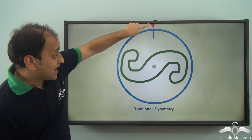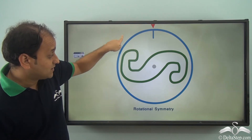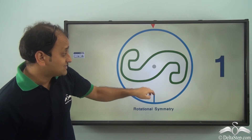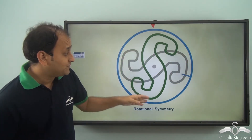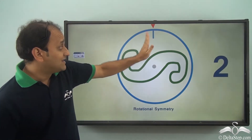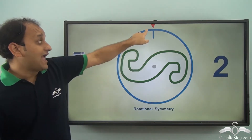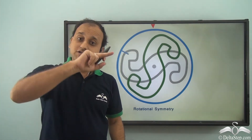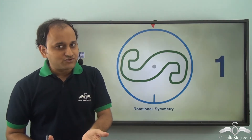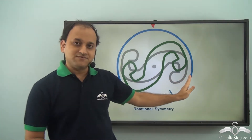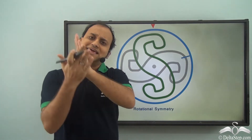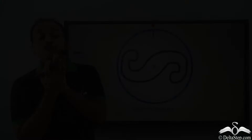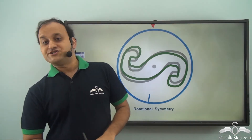As you rotate it, it moves and you get the same figure. Then it moves again and you get the same figure, and the turn is completed. In one full turn, you saw that two times it looked exactly the same. And what do we call it? We call it the order of rotational symmetry.